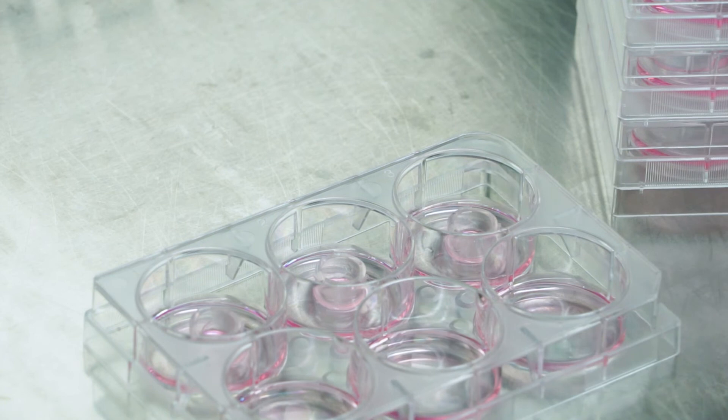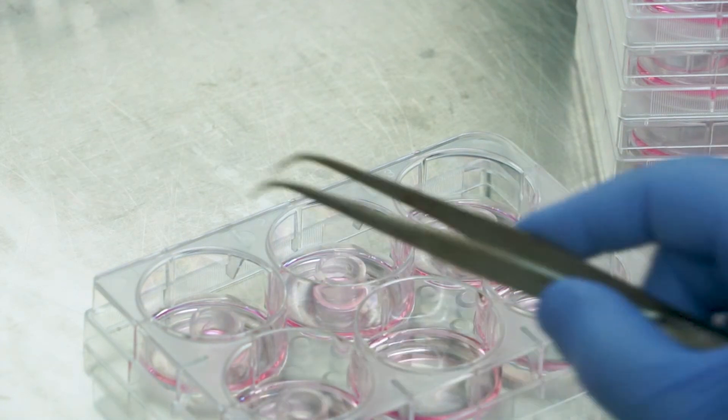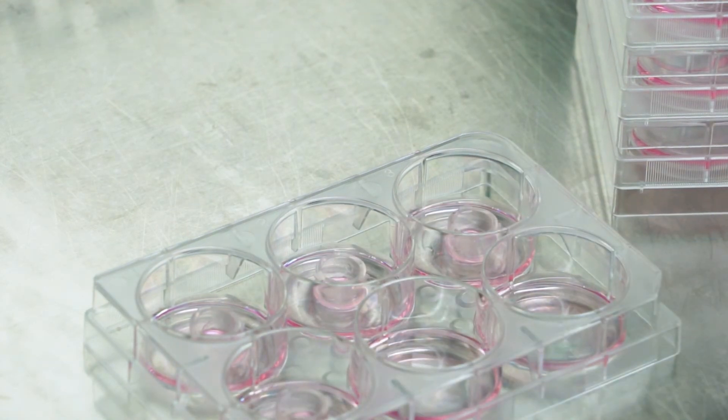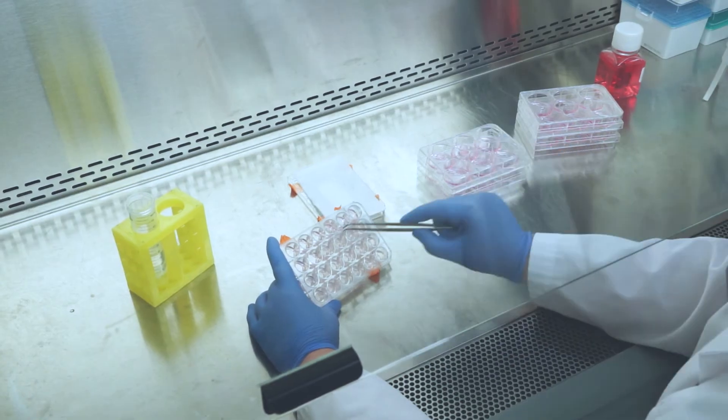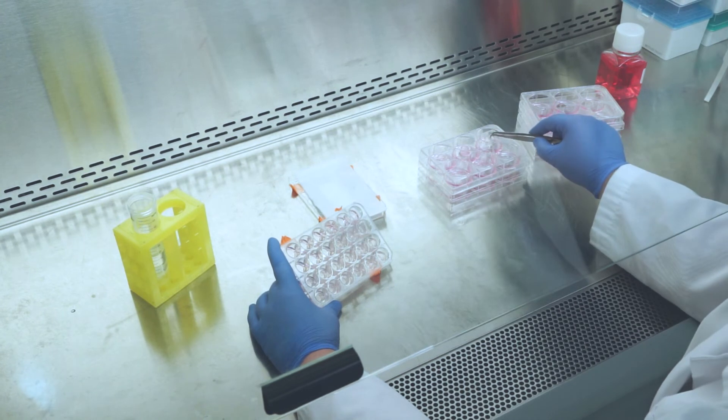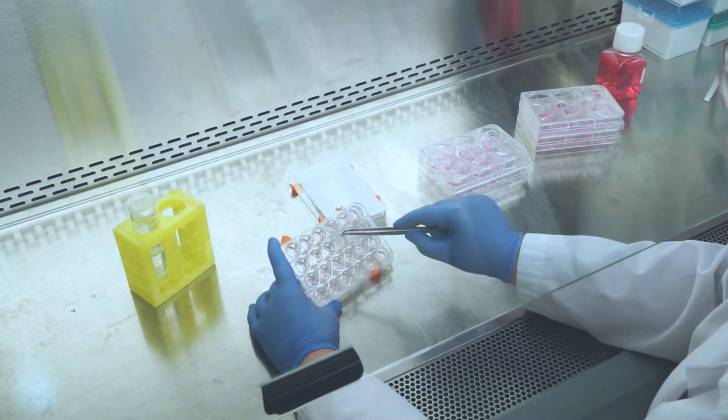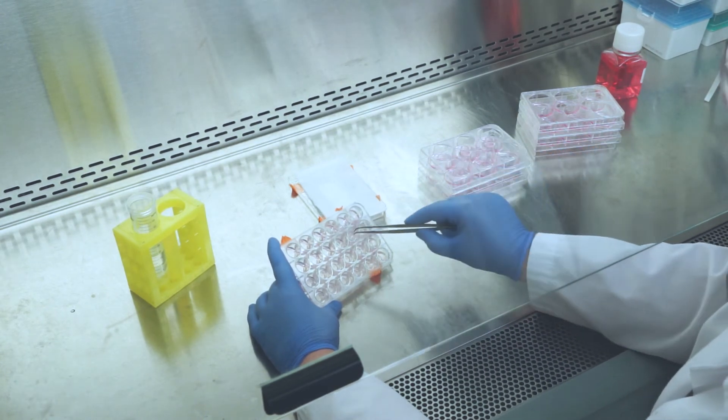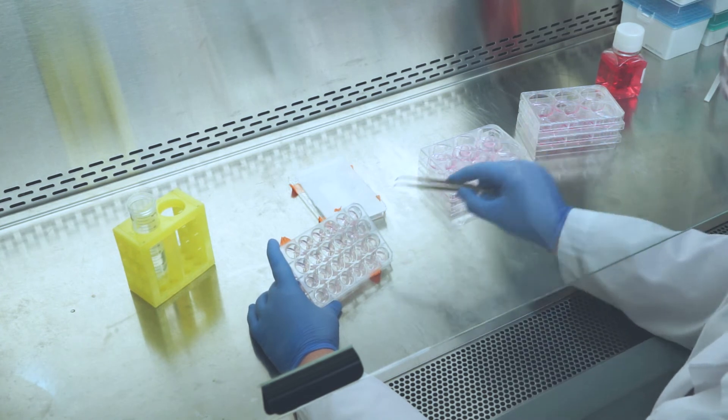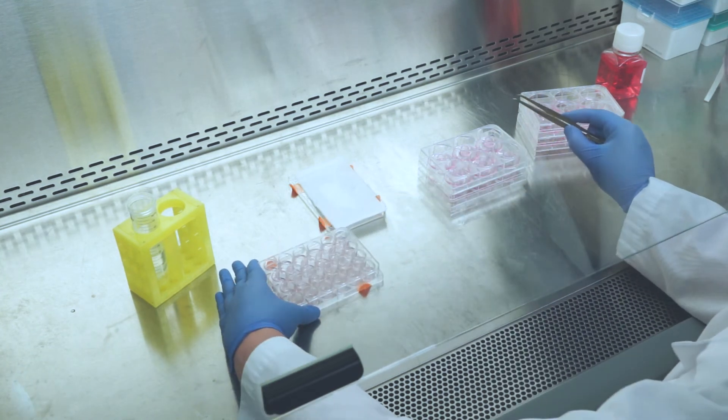With the sterile forceps pinching the top edge of the insert, pull out each insert from the agarose, being careful not to puncture the tissue, and place in one well of the six-well media filled plate. Repeat this step for all remaining tissues.